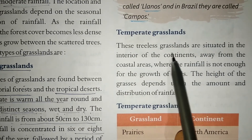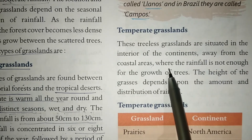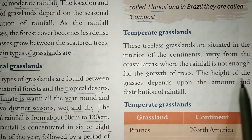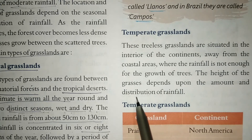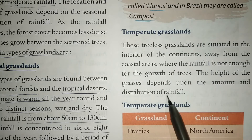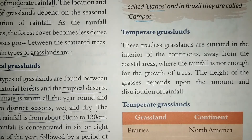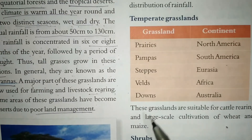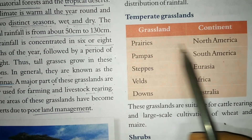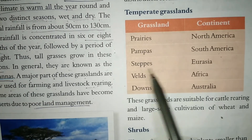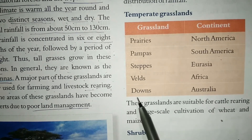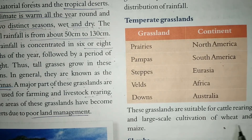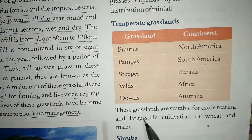The height of grasses in temperate grasslands depends on the amount of rainfall. Famous temperate grasslands include the Prairies in North America, Pampas in South America, Steppes in Eurasia, Veld in Africa, and Downs in Australia. These grasslands are suitable for cattle rearing and large-scale cultivation of wheat. The next part of the chapter will be covered in the next video.